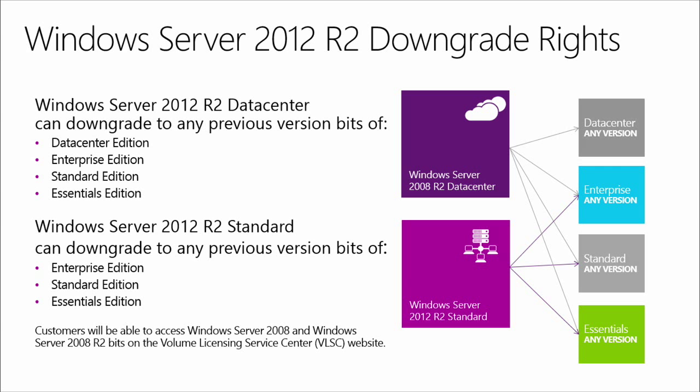It is important to remember that downgrade rights allow a customer to downgrade the bits only, but the license rules of the purchased version still apply. For example, if a customer wants to downgrade from Windows Server 2012 Standard Edition to Windows Server 2008 R2 Enterprise Edition, they can run the enterprise bits. However, the license will still cover two processors and allow for two virtual instances. The bits for Windows Server 2008 R2 are available for download on the Volume Licensing Service Center site; other bits for other versions are not available.